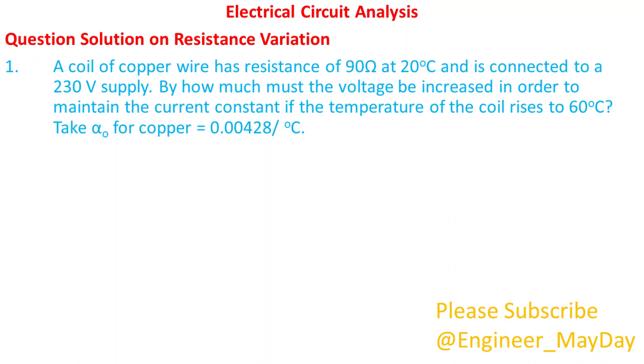Let's begin with this question. A coil of copper wire has resistance of 90 ohms at 20 degrees Celsius and is connected to a 230 volts supply.